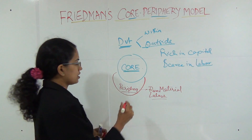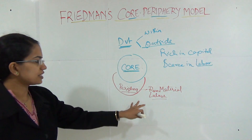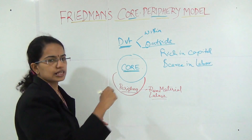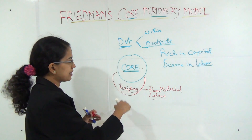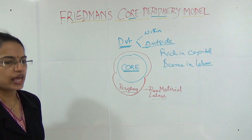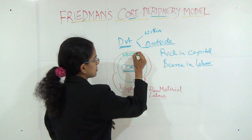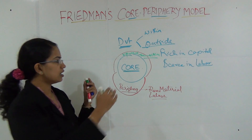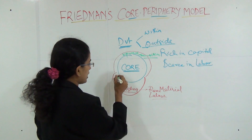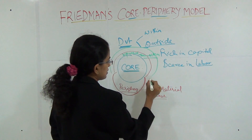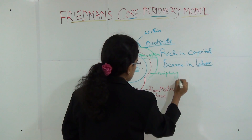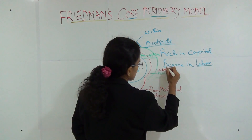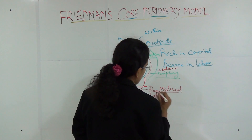The periphery, which has a lot of raw material and labour, would supply labour to the core and the core would start to develop. Friedman explained that above the core there is a region known as the upward transition region, which is influenced by the core and has a lot of economic activities. There is also a resource frontier periphery — one periphery mainly for labour supply and the other mainly for raw material.